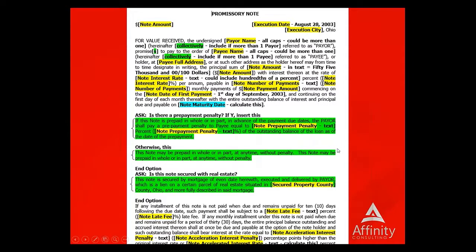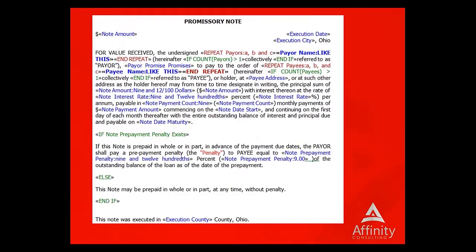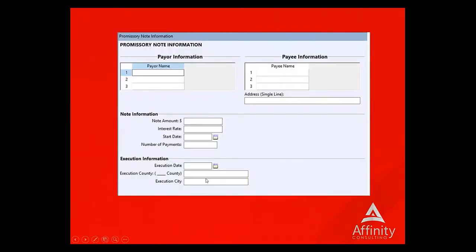Once you go from the markup stage, you proceed to the coding stage. This is the exact same document, now coded in Hot Docs. You can see the Hot Docs fields for the note amount, a payor repeat with punctuation so that regardless of how many payors you enter, the system gets the punctuation right. We've got logic for inserting the word 'collectively' if there's more than one payor, and the rest of the encoding including conditional text logic. When you run it, all you have to do is fill in the relevant information into an interview, and the system generates the document — or this could all come from a case management system, hit a button, and it generates the document.